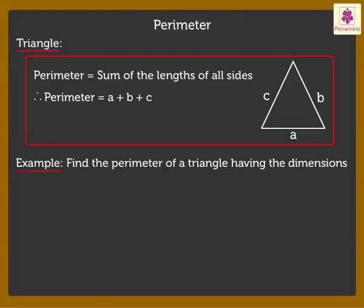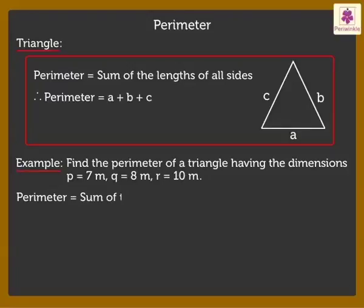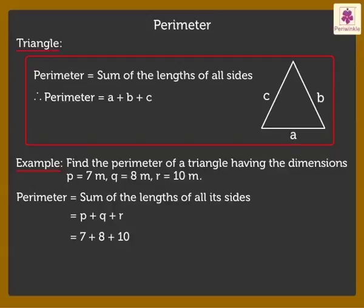Let's find the perimeter of a triangle having the dimensions P equal to 7 meters, Q equal to 8 meters, and R equal to 10 meters. We know that perimeter of a triangle is equal to P plus Q plus R, that is 7 plus 8 plus 10, which is equal to 25 meters. Thus, the perimeter of the triangle is 25 meters.